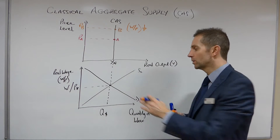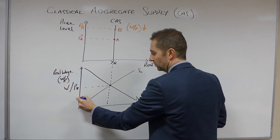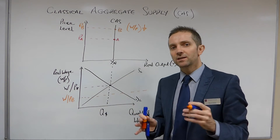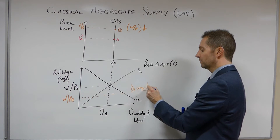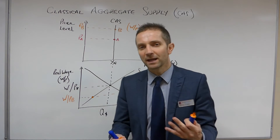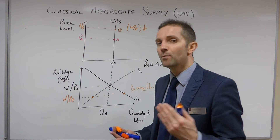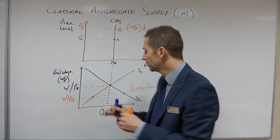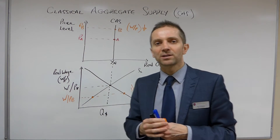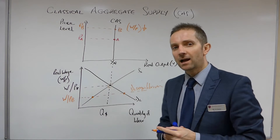Where would that then put us on our labour market diagram? A falling real wage would mean that we would be beneath W/P*, down here somewhere at W/PB. And as a consequence, this is a point of disequilibrium in the labour market, because the supply of labour is much less than the demand for labour. That makes sense: the demand for labour will be much higher because the wage is lower, therefore firms think to themselves, let's employ more people because it's more cost effective. However, classical economists argue that these markets will adjust instantaneously to this change in the price level, ensuring that the market clears once again at W/P* Q*.